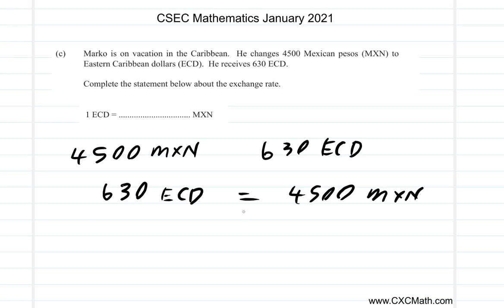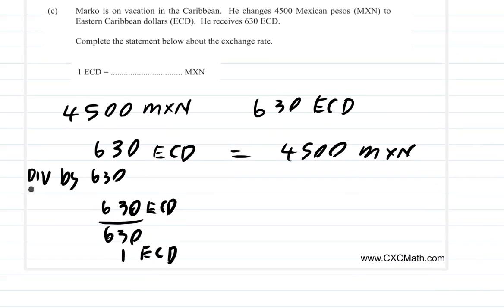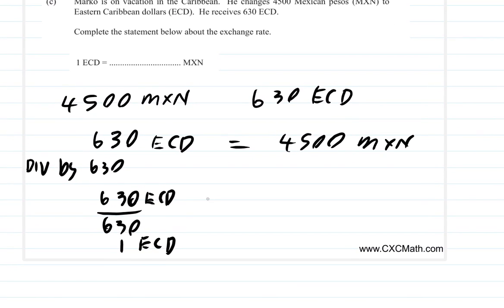And remember, this is an equation. So whatever you do to one side, you must do it to the next side as well. What you do is divide by 630. So 630 ECD divided by 630 becomes 1 ECD. You see that? Now, equal 4,500 MXN must be as though divided by 630.